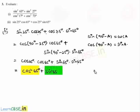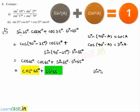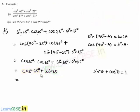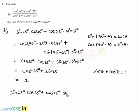This is in the form sin²θ + cos²θ, and from identity 1, this value equals 1. Therefore, sin25°·cos65° + cos25°·sin65° = 1.